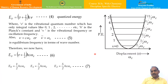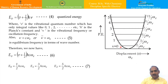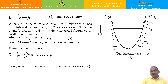For v = 0, this energy is called the zero point energy. Zero point energy is the minimum amount of energy associated with a vibrating molecule. This energy exists even at absolute zero of temperature, when all other forms of energy become zero — and therefore this is called zero point energy.